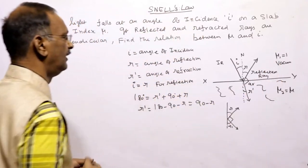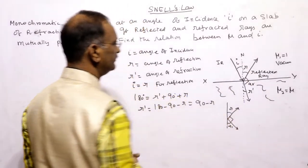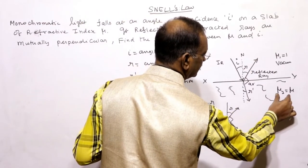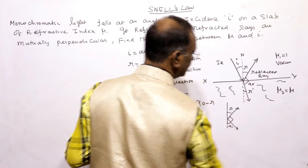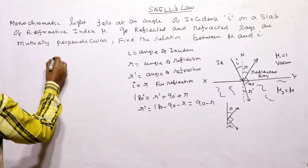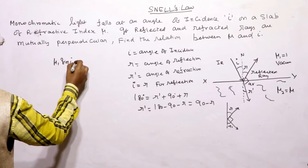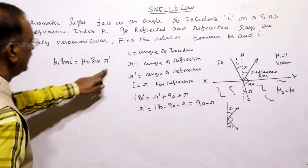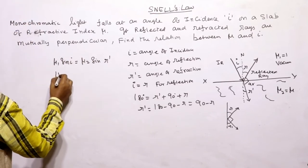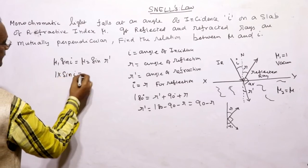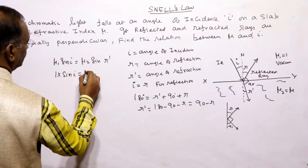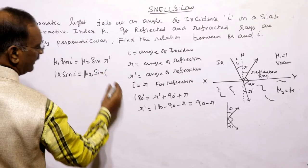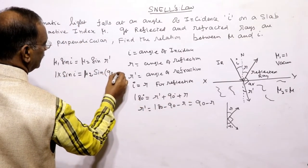Now applying Snell's law on the boundary between vacuum and the other medium: refractive index of medium 1 × sin(i) = refractive index of medium 2 × sin(r'). Since mu1 = 1, this gives sin(i) = mu2 × sin(r'). Substituting r' = 90° − r.